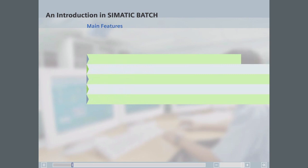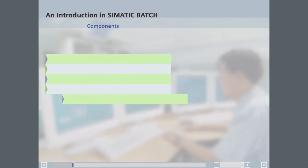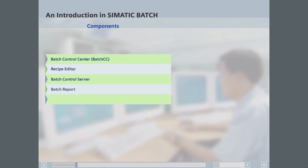Simatic Batch is made up of various components: the Batch Control Center, also known as Batch CC; the Recipe Editor; the Batch Control Server; the Batch Report; and the Interface Blocks.